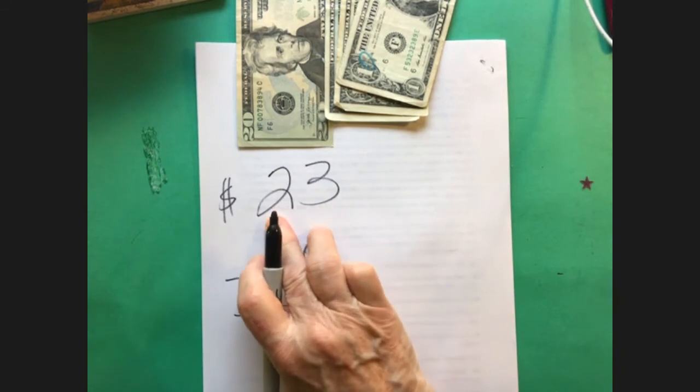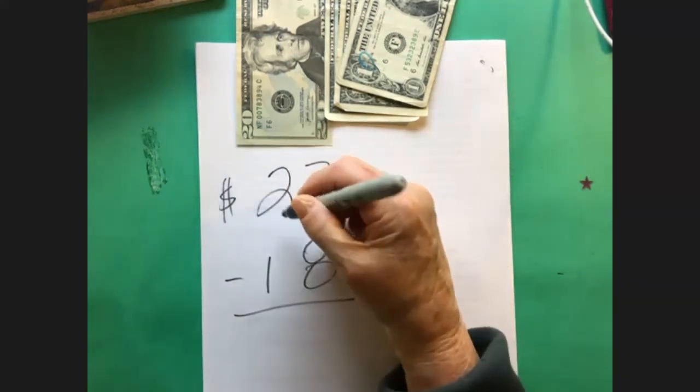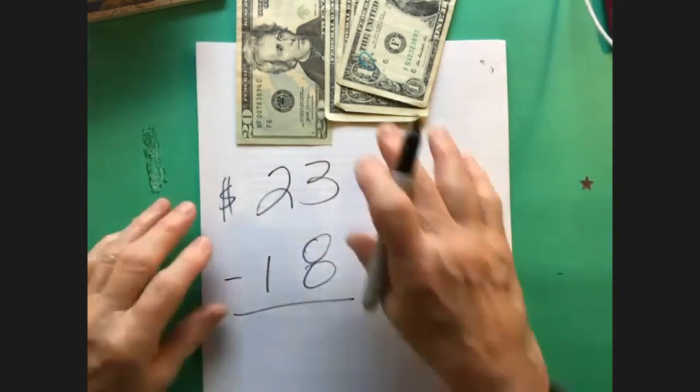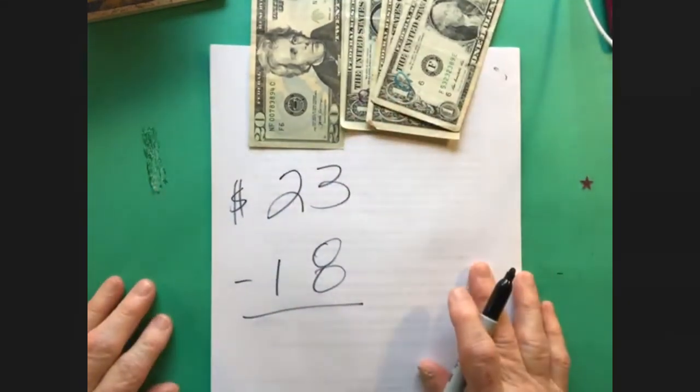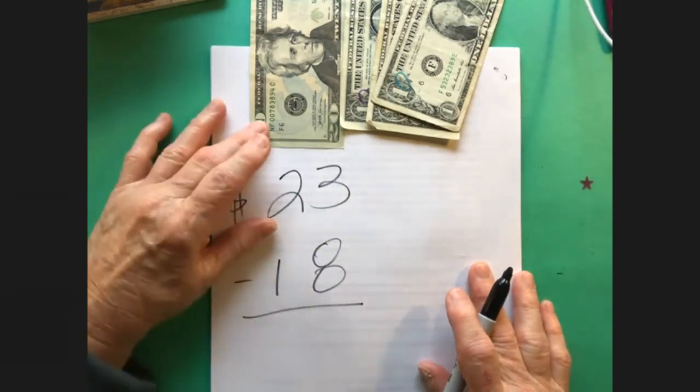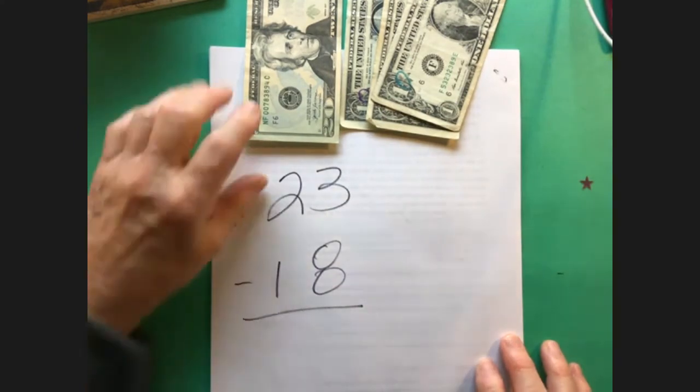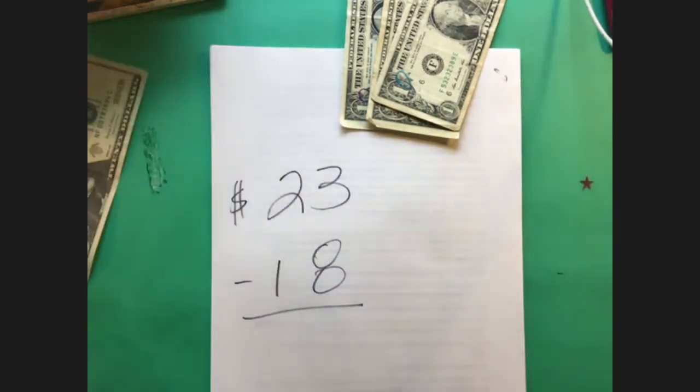Oh we'd say can't take eight from three. Number one, that's a lie - you can, you're in debt. And so we say go over to the two - that's not a two, that's a 20. We say slash it, I call it the killer method - kill it, kill it, kill it. Think about this: if you went shopping and you had a 20, you had a 20 bill and three ones, and you wanted to buy something for 18.